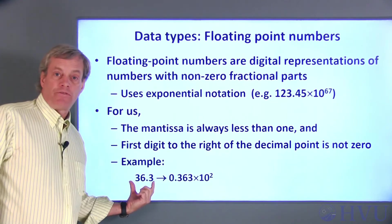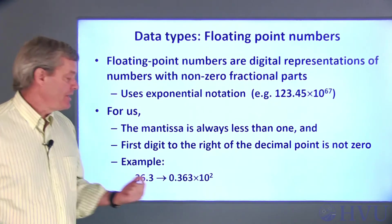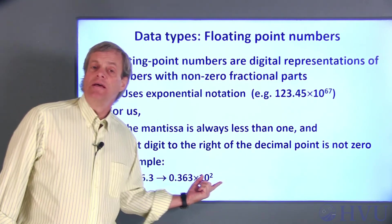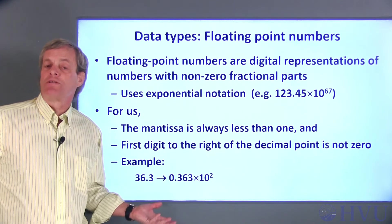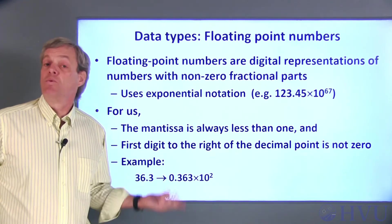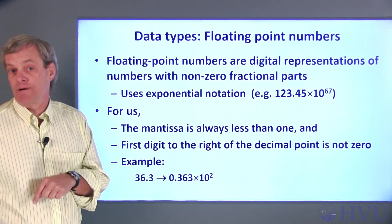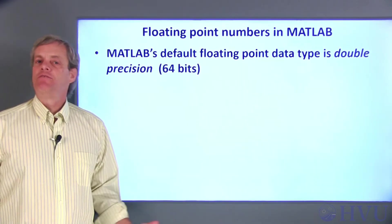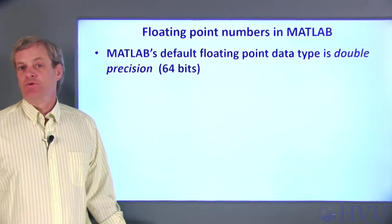For example, the number 36.3 would be represented as 0.363 times 10 squared. This is important because of the way MATLAB interprets the bits in a floating point number, which in turn affects the range of possible values that get used in our calculations.